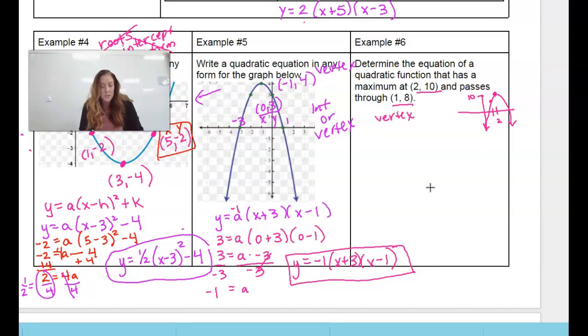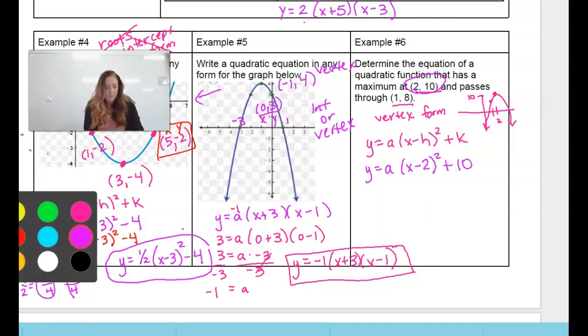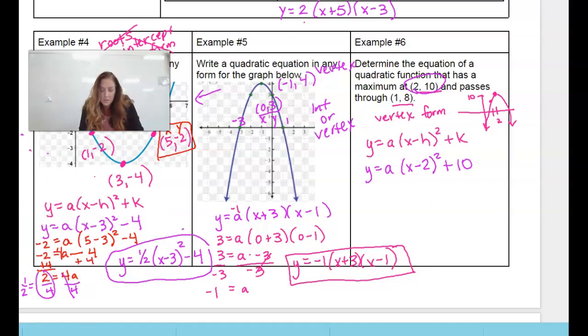I do typically do standard form as a last resort. The other two are just more quicker, user-friendly, whatever. So y equals a x minus h squared plus k. So we know our vertex is right here. So I get x minus 2 and then the 10 stays positive. And then I know this point. So that's x. That's y. So y is 8. I don't know a. And x is 1.